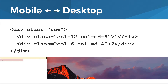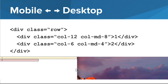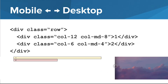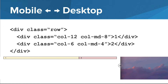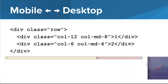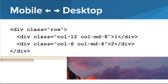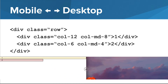During the extra small view, the divs are stacked, with the first div taking up the entire 12 columns, and the second div taking up 6 columns. Then, as the page width increases to the medium breakpoint, the first div switches to 8 columns in width, and the second div becomes 4 columns in width, enabling both divs to appear on the same row.